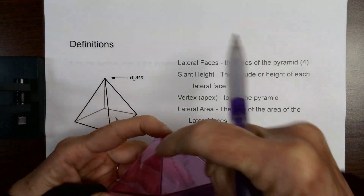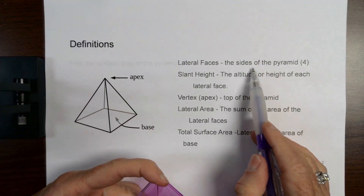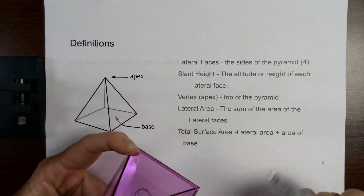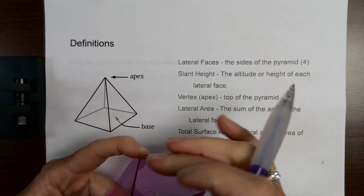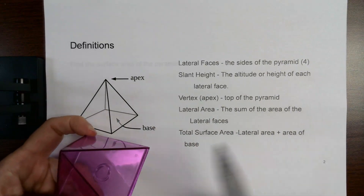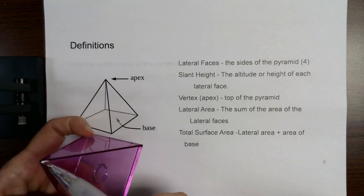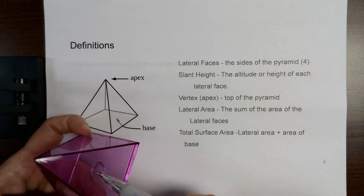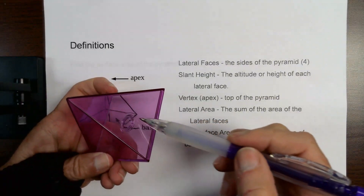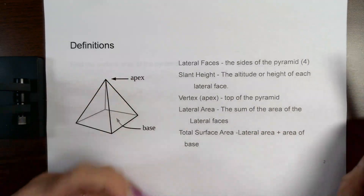The sides that are made up of triangles are called the lateral faces — those are the sides of the pyramid. If it is a square pyramid or a rectangular pyramid, there are four lateral faces. The slant height is the altitude of each lateral face. If I could draw a line straight down on the side, that would be considered the slant height of that lateral face.